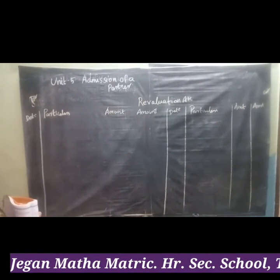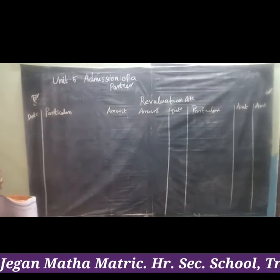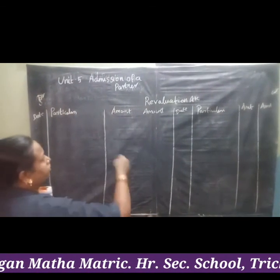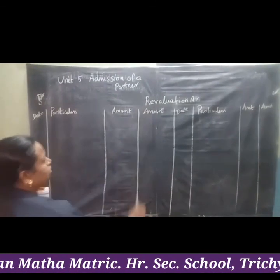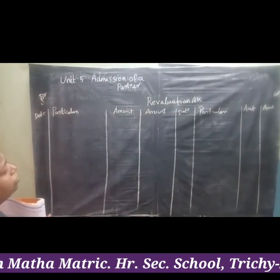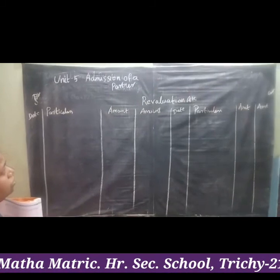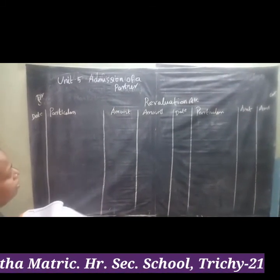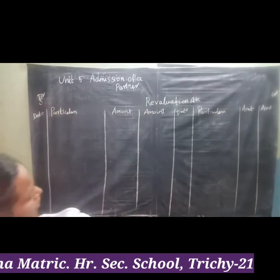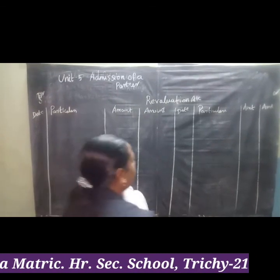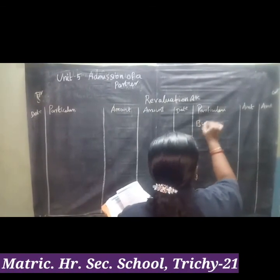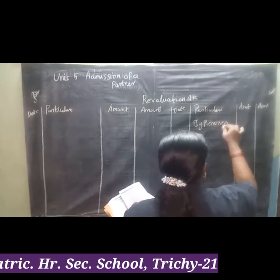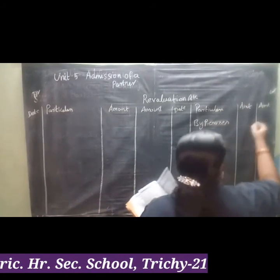Next, we are going to see the Revaluation Account ledger. I will write the journal entry, and now we are going to work out the ledger. First entry in the Revaluation Account: Premises Account Dr to Revaluation — so on the credit side, by Premises Account, 60,000. This is a profit.